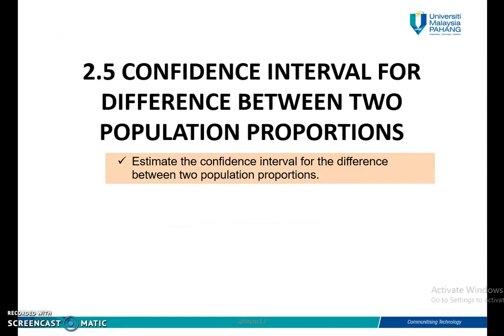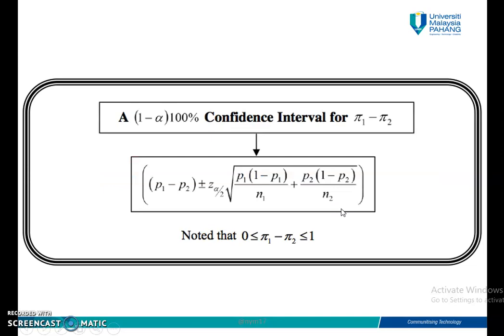For this subtopic, the expected outcome is that you as a student should be able to estimate the Confidence Interval for the Difference Between 2 Population Proportions. This is the only formula, and you can get it from your statistical table, page 6.